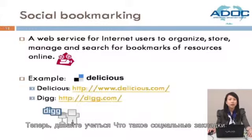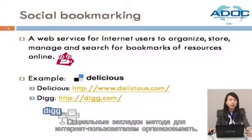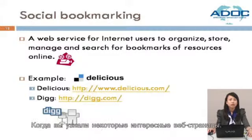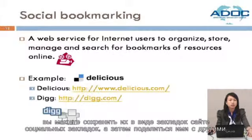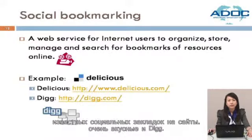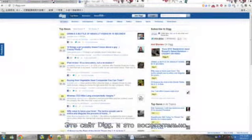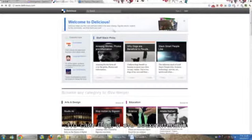Now let's learn what social bookmarking is. Social bookmarking is a method for internet users to organize, store, manage, and search for bookmarks of resources online. When you find some interesting web pages, you can set them as bookmarks in a social bookmarking site and then share them with others. The famous social bookmarking sites are Delicious and Digg. This is the Digg website, and this is Delicious.